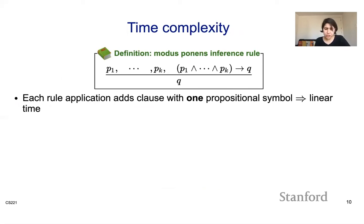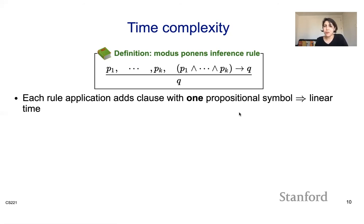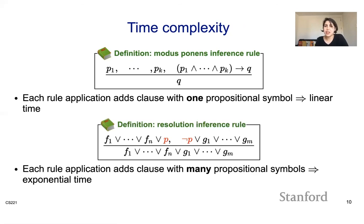A good question is: what is the time complexity of these algorithms? With modus ponens, at every step we add at most one propositional symbol to the knowledge base. If you have N symbols, you have at most N things to go over, so modus ponens is a linear time algorithm — it converges fairly quickly.